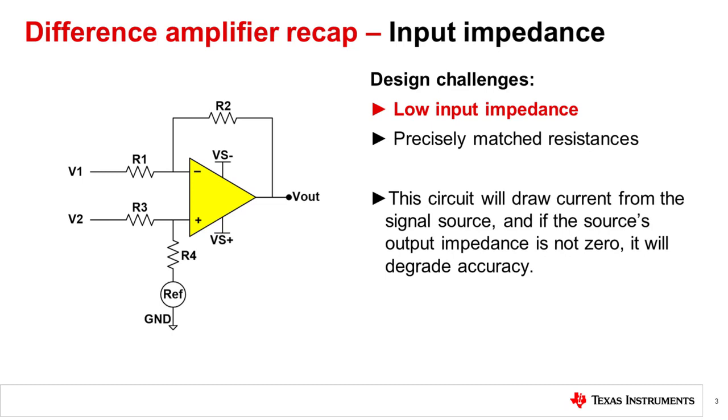High input impedance is necessary to avoid loading down the input signal source, which could also alter the input signal voltage. In the last lecture, we saw the level of error this caused for a few different current shunt monitoring examples. We also went over how to reduce these errors by changing or adding a few resistors.